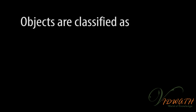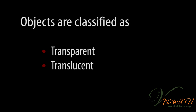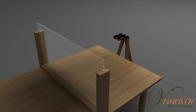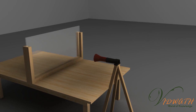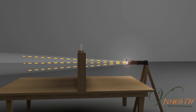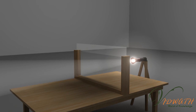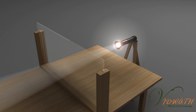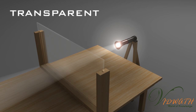Objects are classified as transparent, translucent, or opaque depending upon their treatment of light. Let us conduct an experiment. Objects that allow light to pass through them without scattering the rays, so we can see the objects clearly, are called transparent objects. Objects that are transparent include glass, clean air, and pure water.